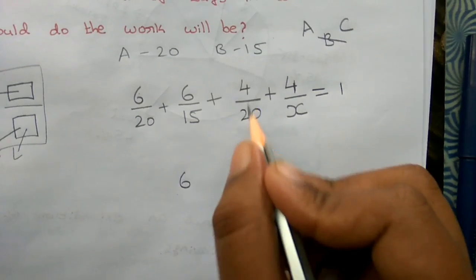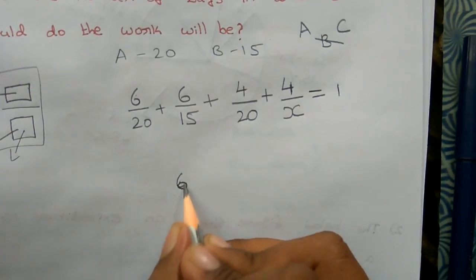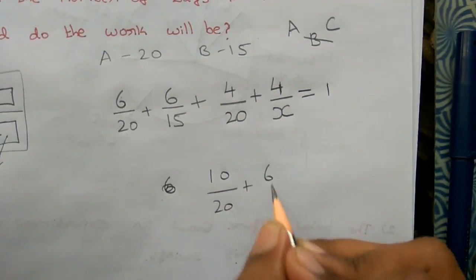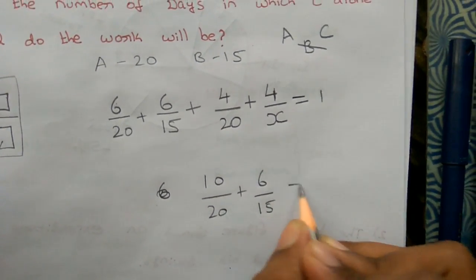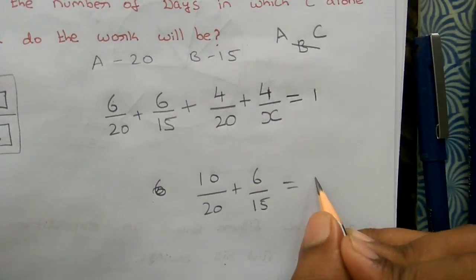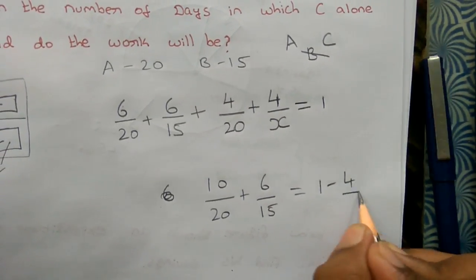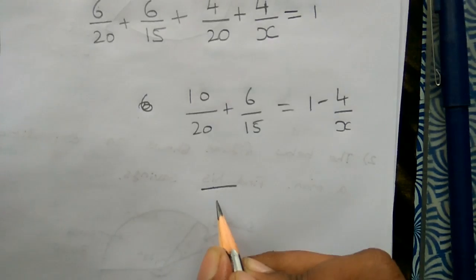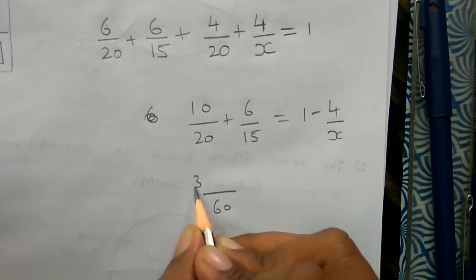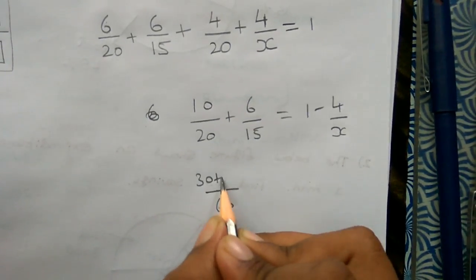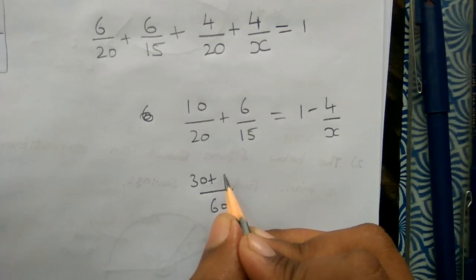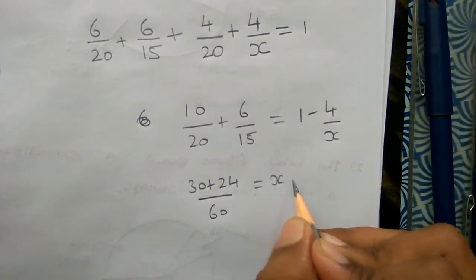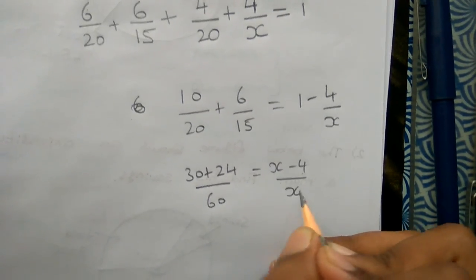C is about 4 by x. If you add: 4 by 20 plus 6 by 15 plus 4 by x equals 1. Taking LCM as 60, that gives 12 plus 24 equal to x minus 4 by x.